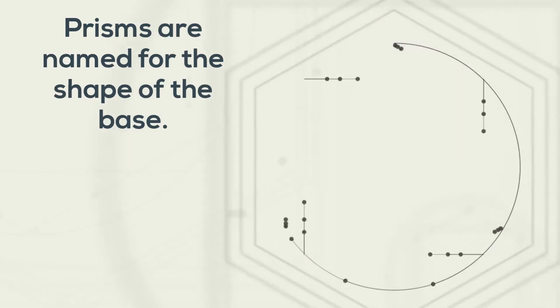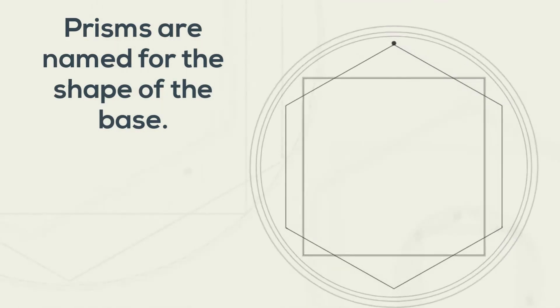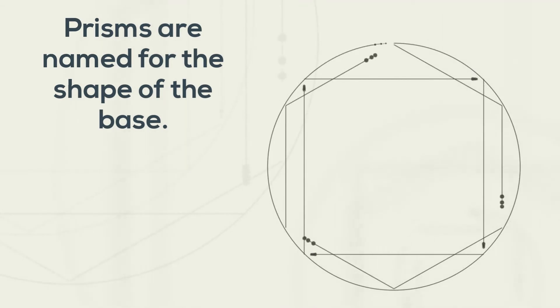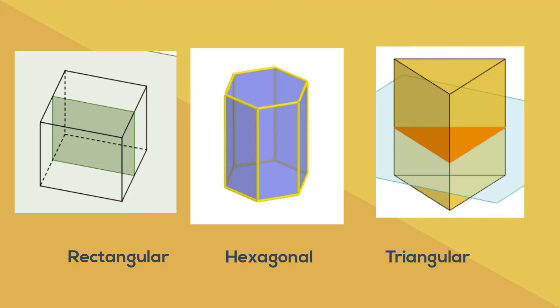Next, prisms are named for the shape of the base. So let's take a look at these three prisms. You have a rectangular prism, you have a hexagonal prism, and you have a triangular prism. And all three of them, they're named after the base. Triangular, the two bases are triangles.